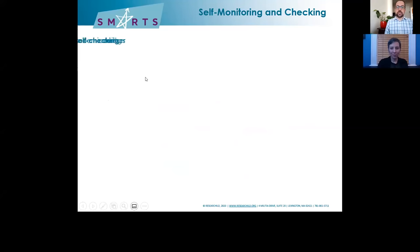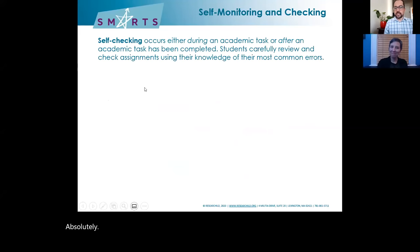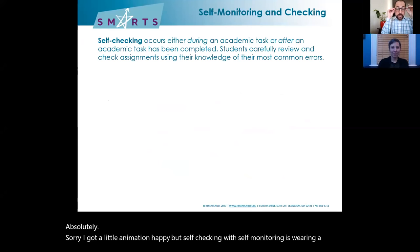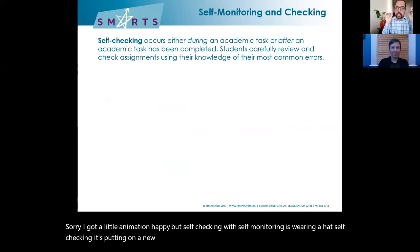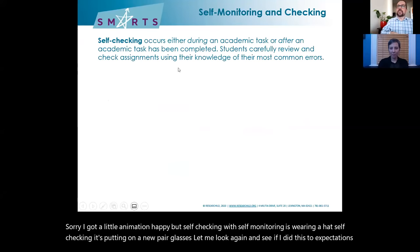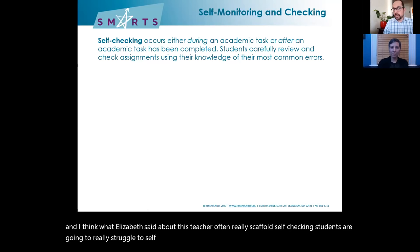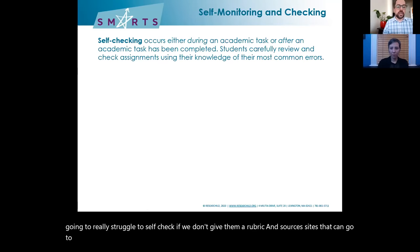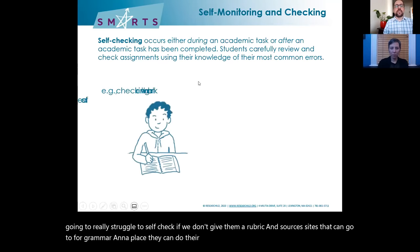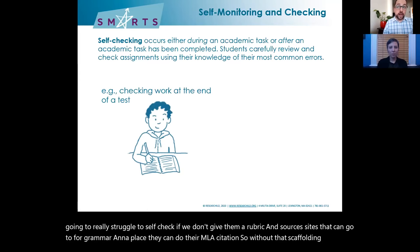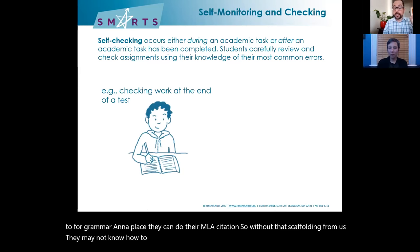If self-monitoring is wearing a hat, self-checking is putting on a new pair of glasses — let me look again and see if I did this to expectations. Teachers often really scaffold self-checking: students are going to struggle to self-check if we don't give them a rubric, sources they can go to for grammar, and a place they can do their MLA citation. Without that scaffolding from us, they may not know how to really put on a pair of glasses to see in a new way.